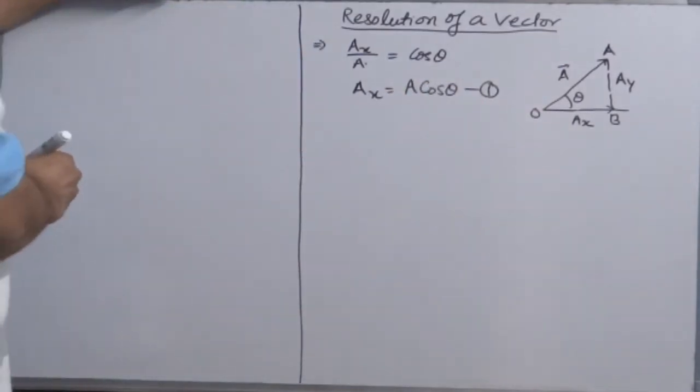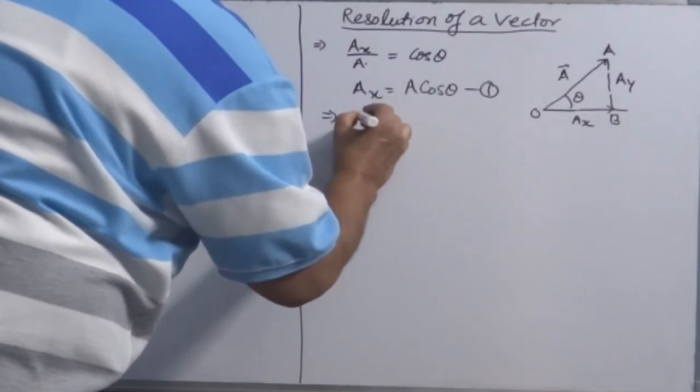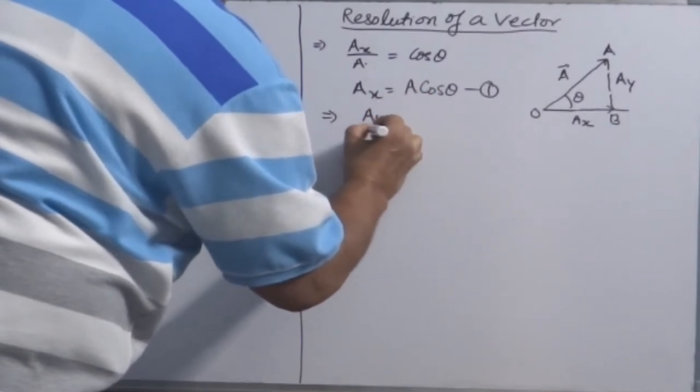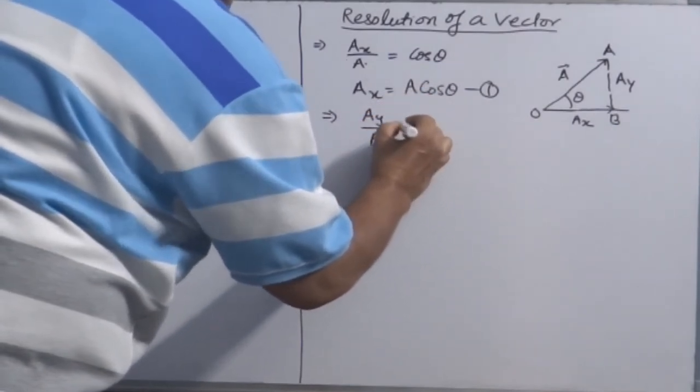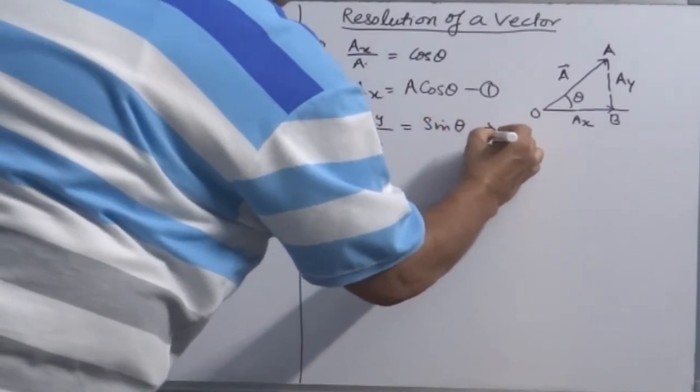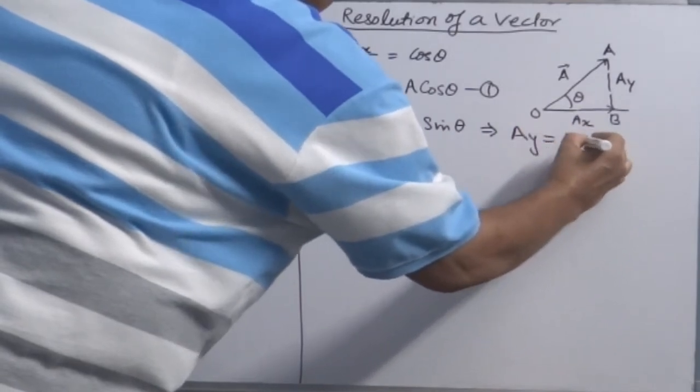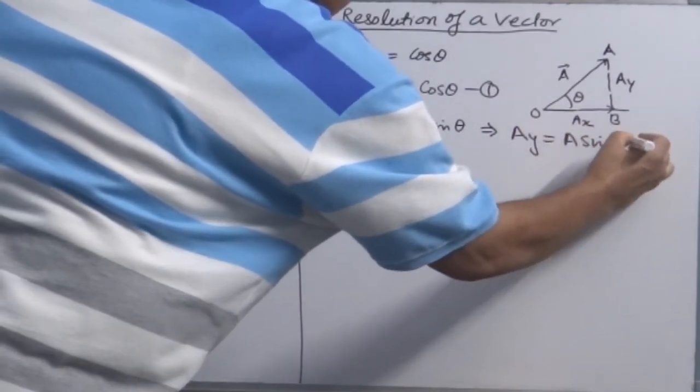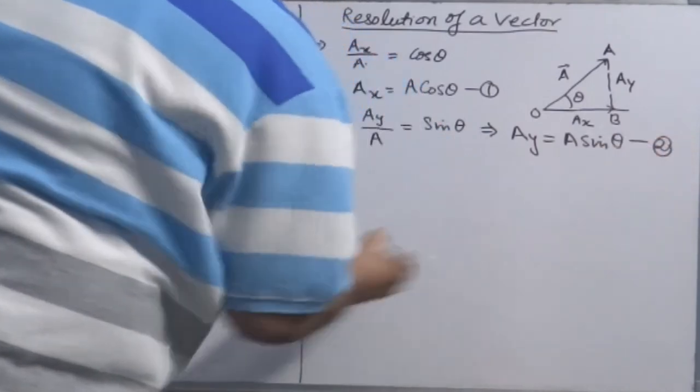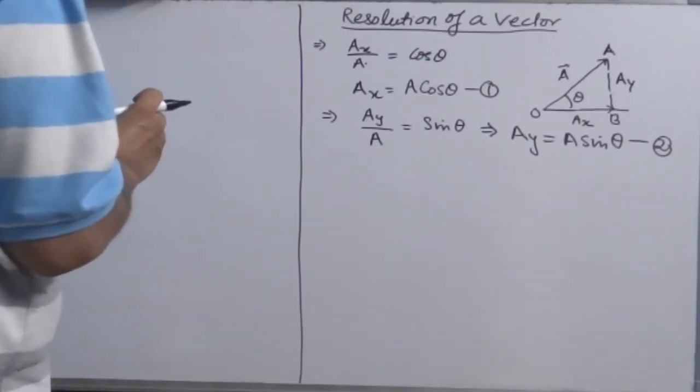This is cosine component. Similarly, from other vector Ay, perpendicular over hypotenuse vector A is equal to sin theta. So vertical component will be Ay is equal to A sin theta. So we have resolved two vectors. Vector A is divided basically into two vectors Ax and Ay.